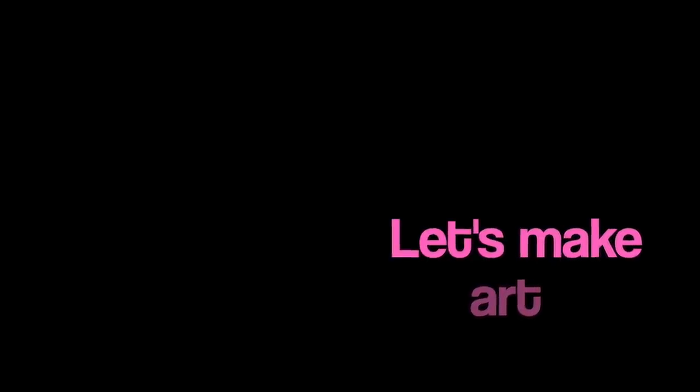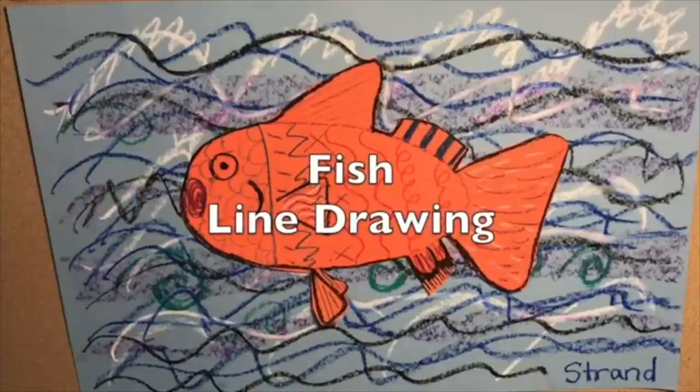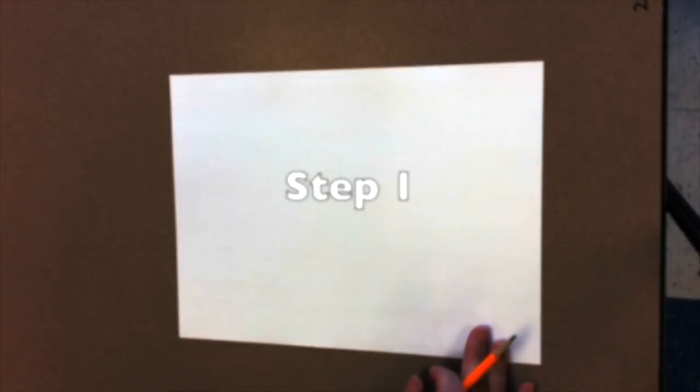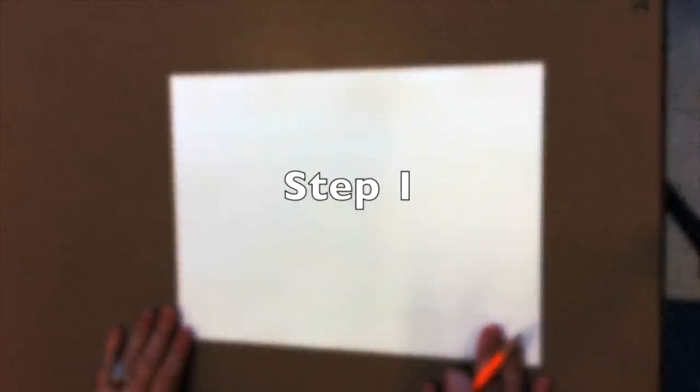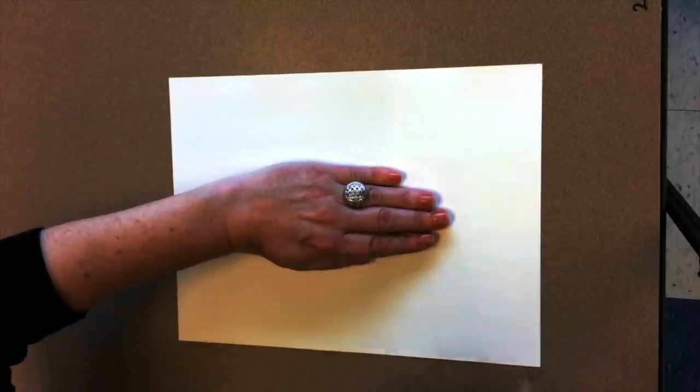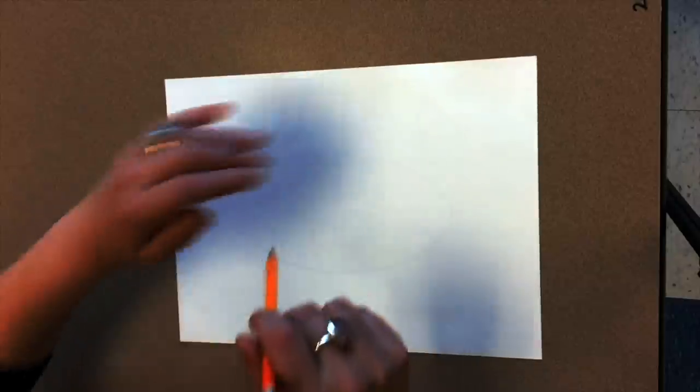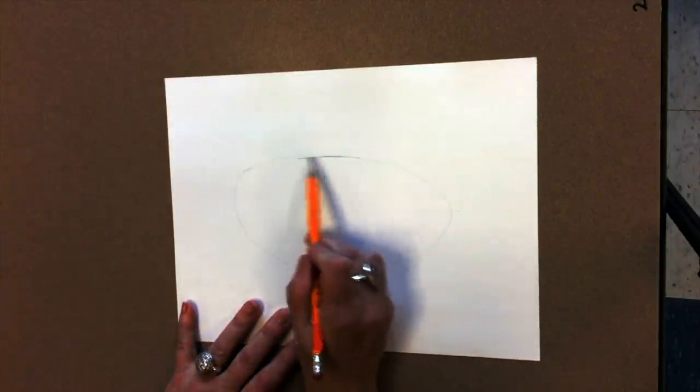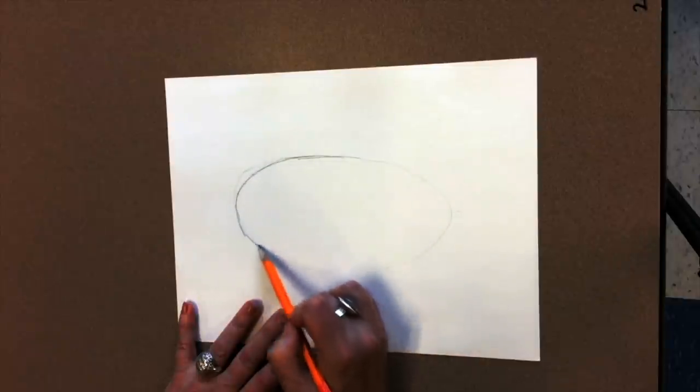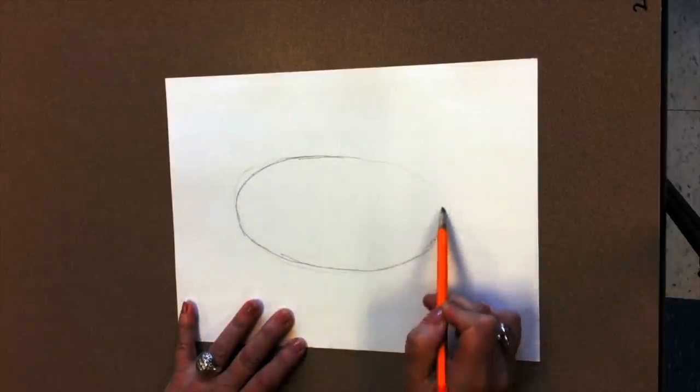Now I will show you some ideas that you can use in your project. Then it will be your turn to make art. We are going to make a fish line drawing. I can use either colored paper or white paper, depending on what I have around. To start, I'm going to need to do the fish body. I'll just draw around my hand, maybe about the size of my hand. That will give me a fish body. And maybe I'm going to go back and make it a little bit darker. That's my fish body.